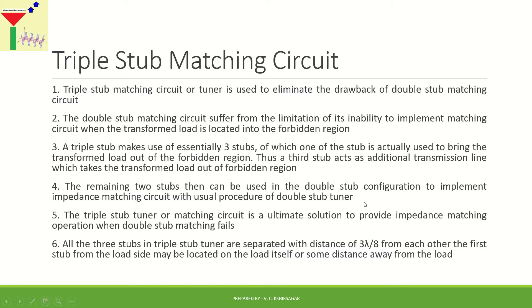The triple stub tuner is the ultimate solution to provide impedance matching when the double stub matching simply fails. All double stub tuner circuits are associated with a small forbidden region. All three stubs in the triple stub tuner are separated by a distance of 3λ/8 from each other, and the first stub from the load side may be located on the load or at some distance away from it.